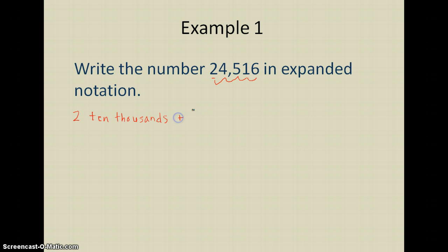Then I'm going to put a plus sign. The next digit over is the 4, and the 4 we said was in the thousands place, so I have 4 thousands. I'm going to put another plus sign. The next digit is the 5, and it's in the hundreds place.